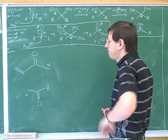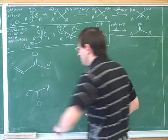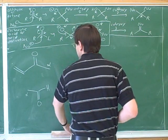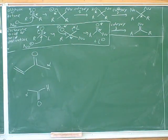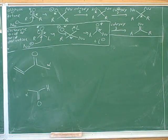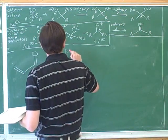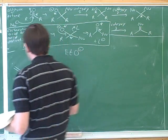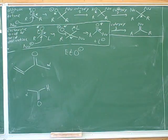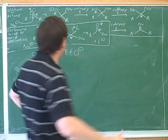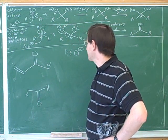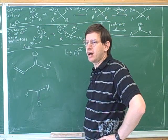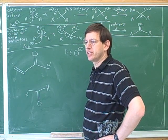Here's the basic setup for a Robinson annulation. Now, what would be reasonable to have happen here? We have a base and a bunch of alpha carbons, so one reasonable thing is to deprotonate an alpha carbon and turn it into an enolate.